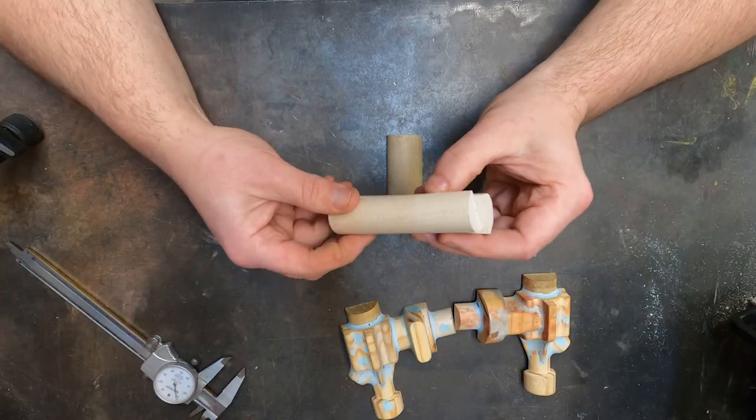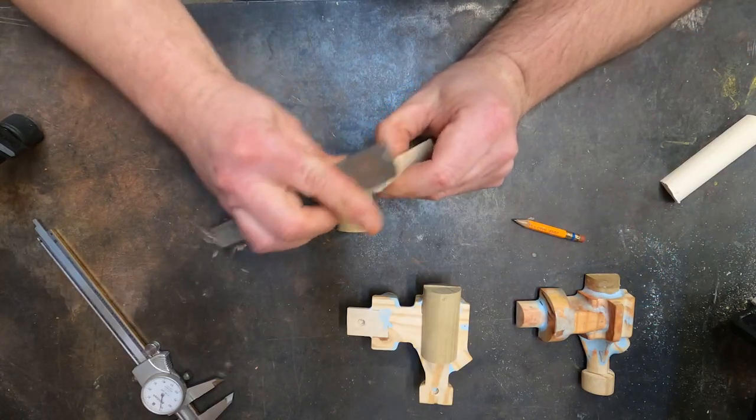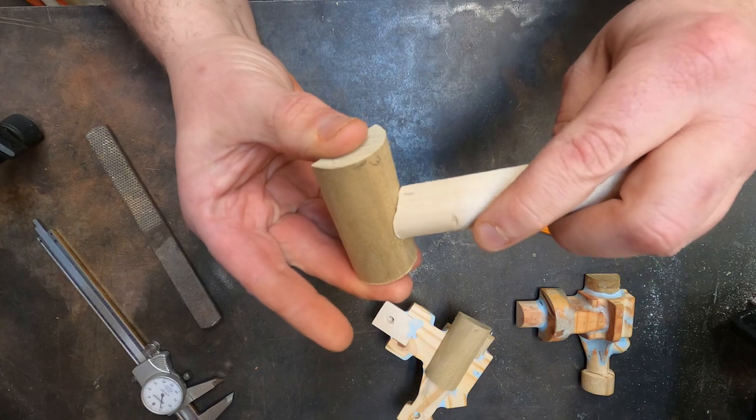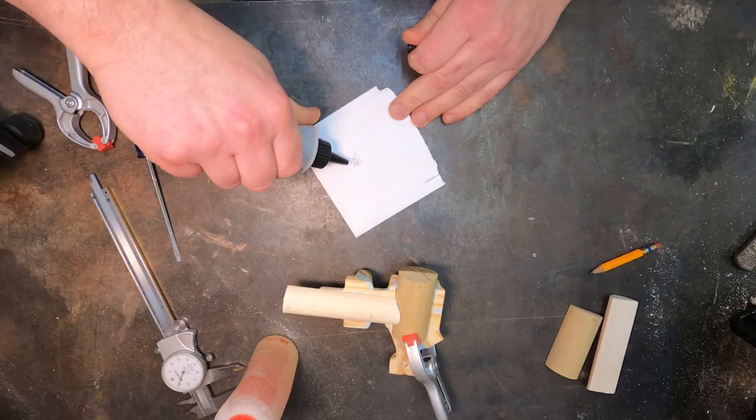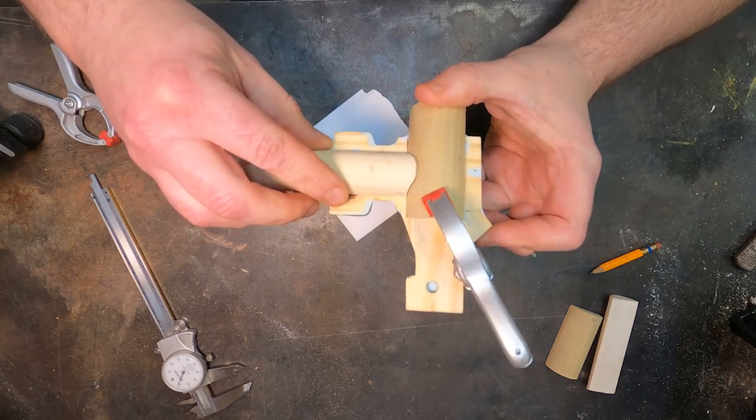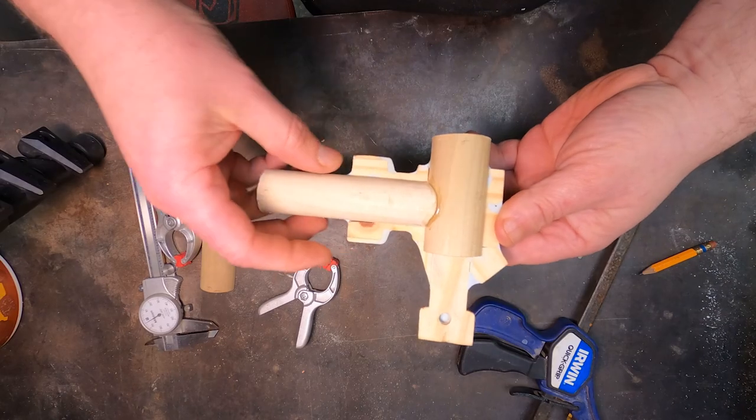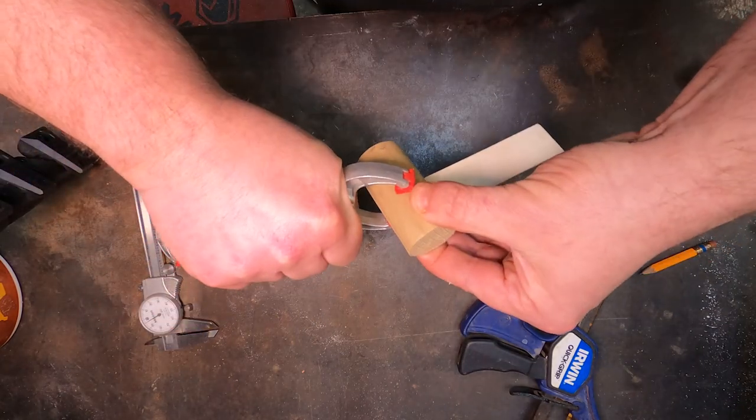So now we got our dowels cut in half, we can join them together. Just need a somewhat okay fit. This glue is geared, okay, so now clamp that one on there.